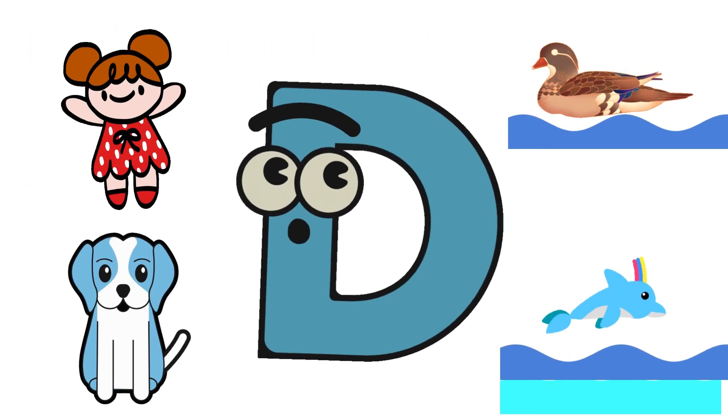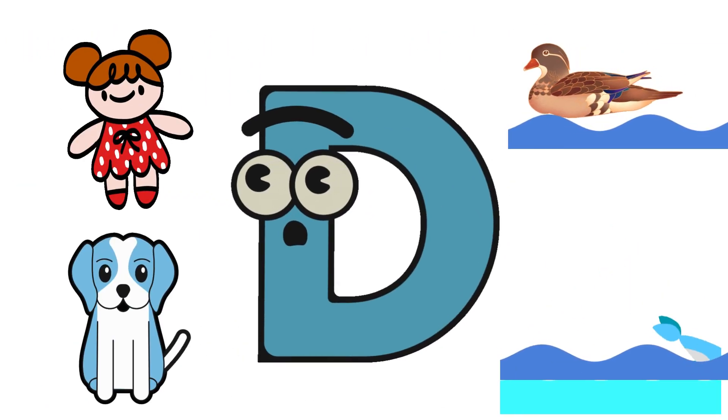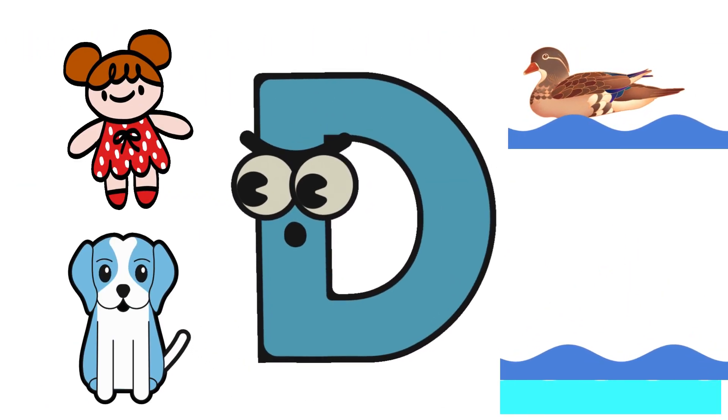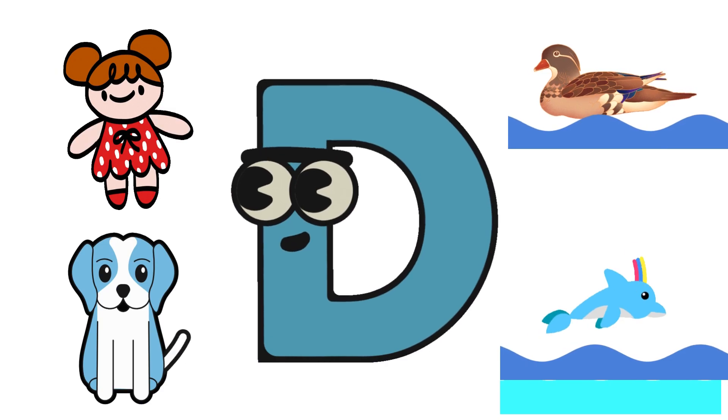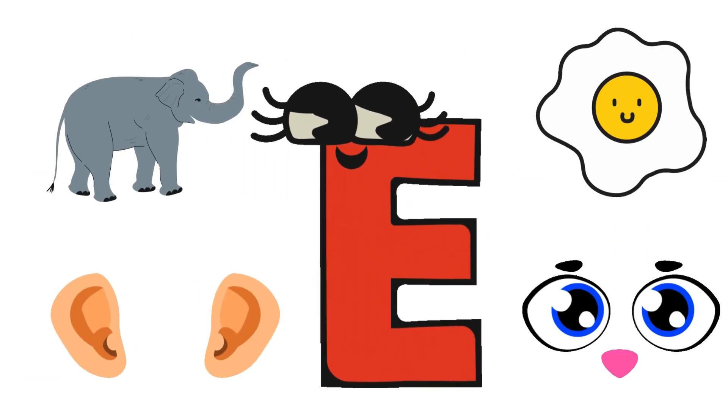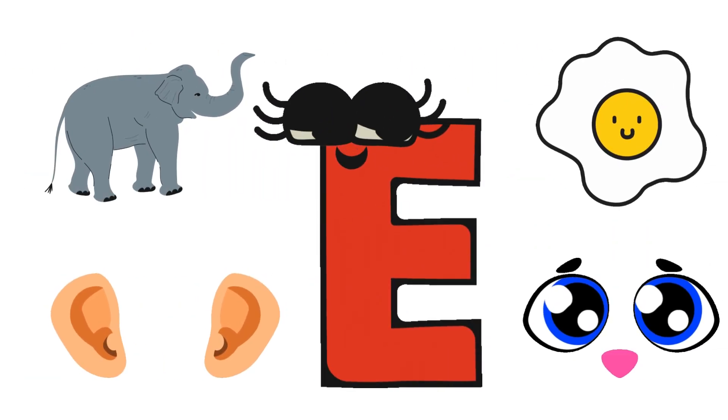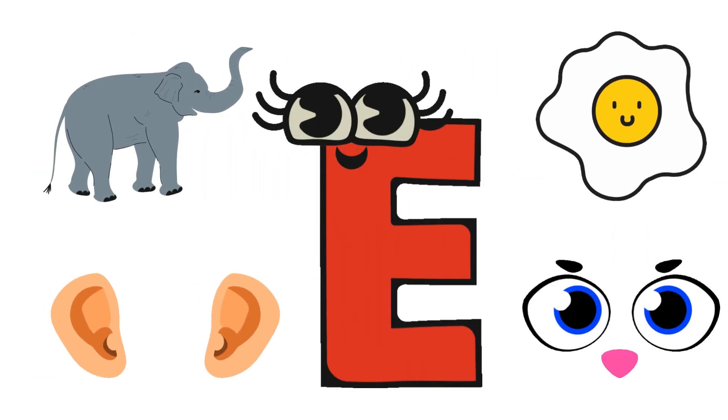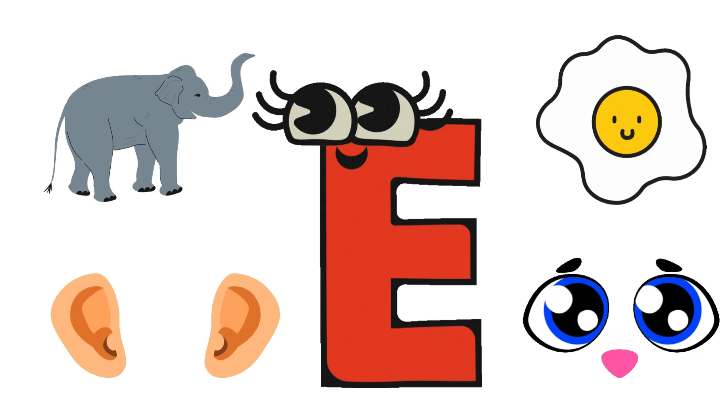D for dog, duck, doll, dolphin. E for elephant, egg.